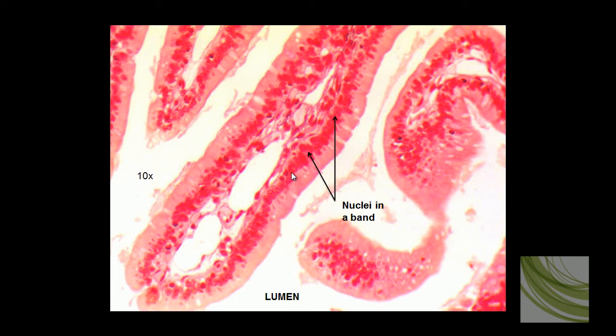We see all the individual little simple columnar cells. We can also see a few goblet cells mixed in here. Looks like there's one goblet cell that's expelling its mucus.